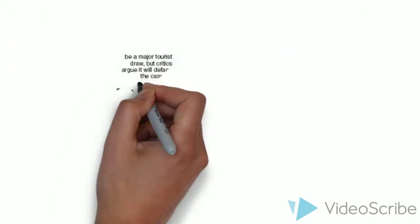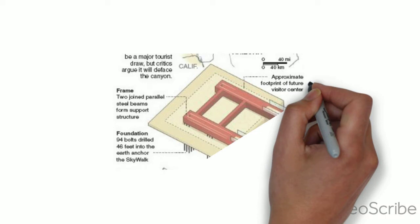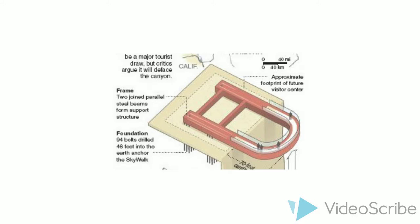Thus, the support box beam was built as the base of the skywalk: 6 feet high, 32 inches wide, and 2 inches thick walls. The foundation of the box beam consists of 94 bolts buried 46 feet deep into the limestone bedrock to support the weight of the skywalk.